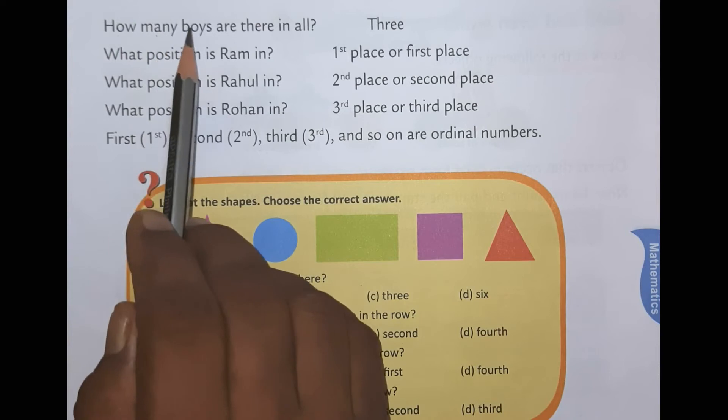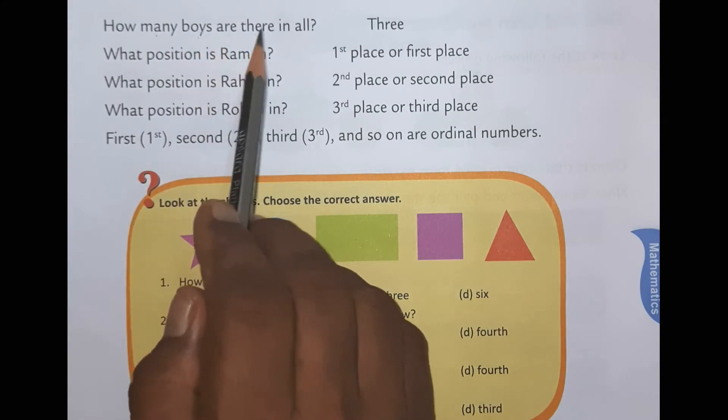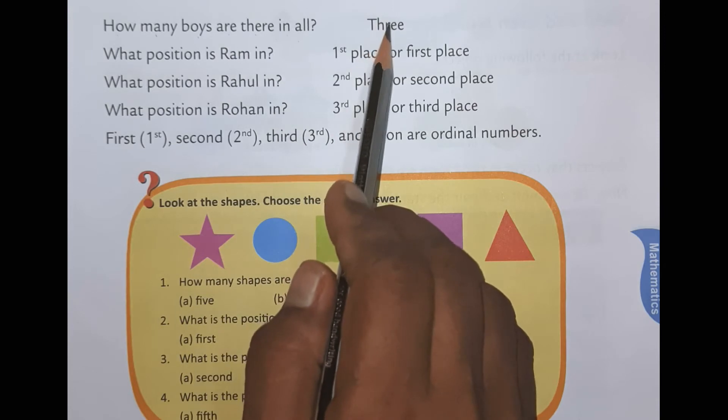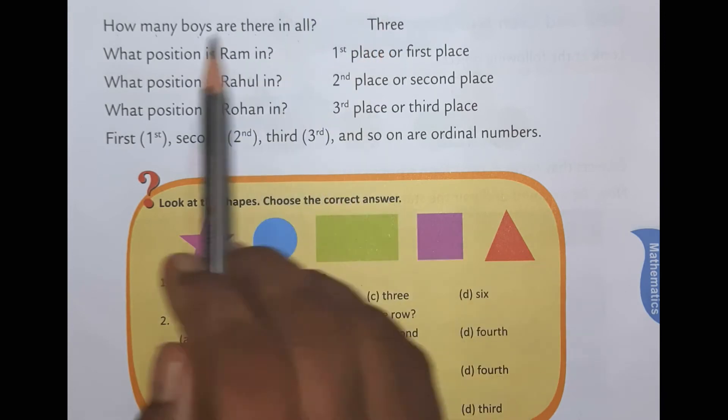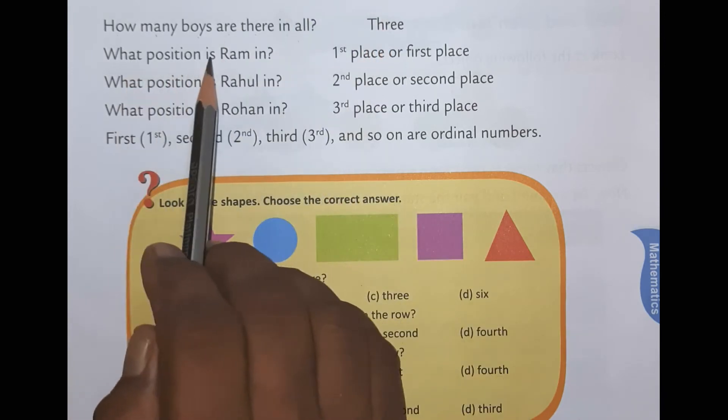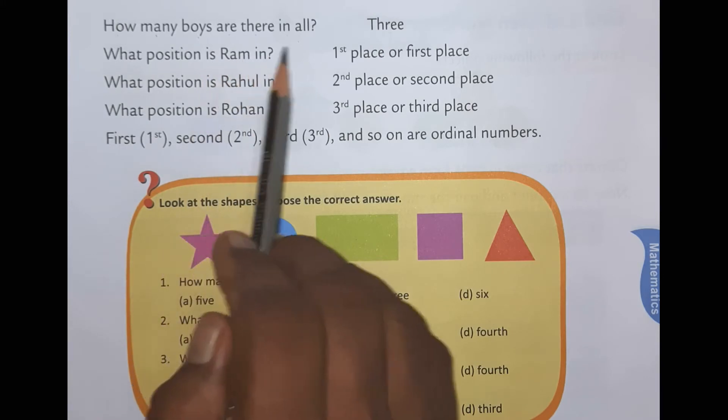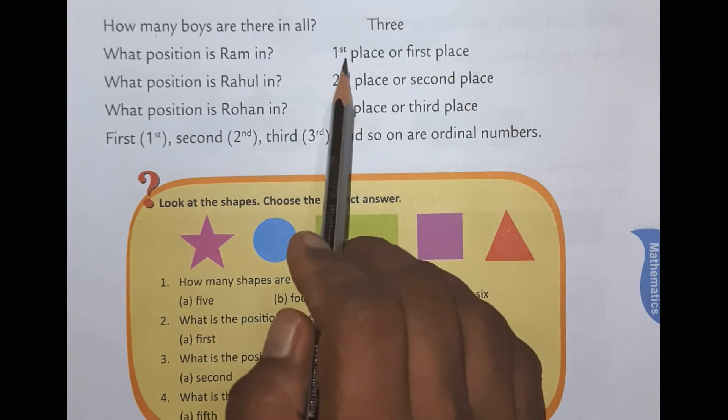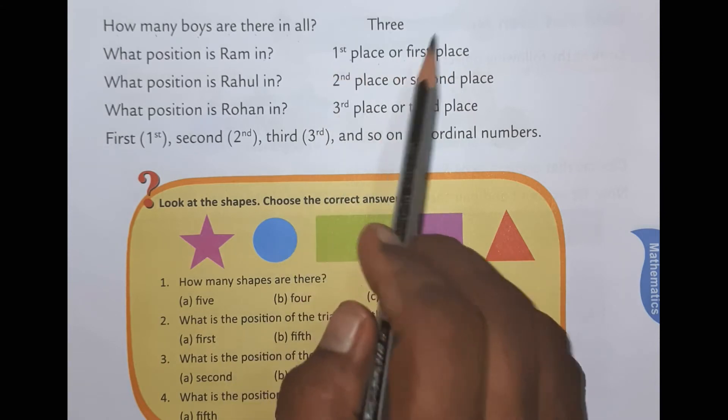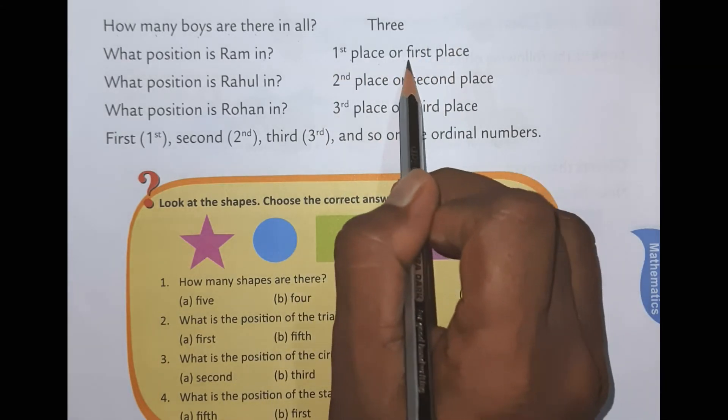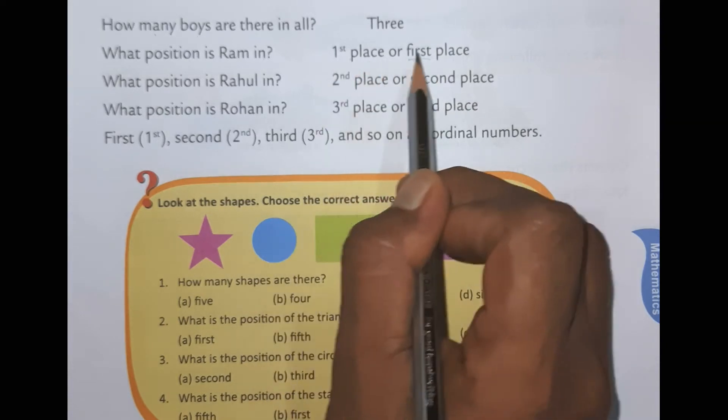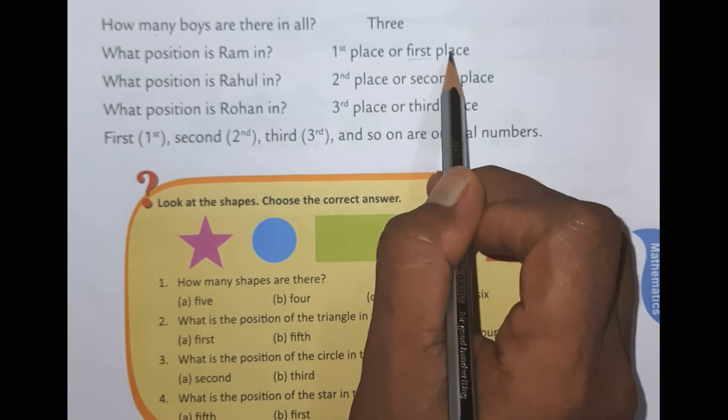How many boys are there in all? How many boys were there? Three. T-H-R-E-E. Three. What position is Ram in? First place or first place. We can write first like this or we can write also like this. One S-T means first place or F-I-R-S-T first place.